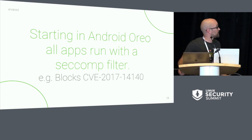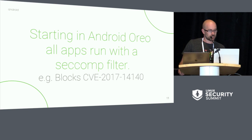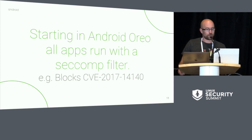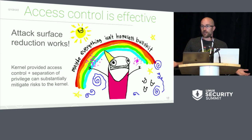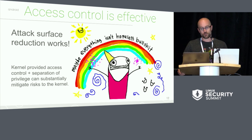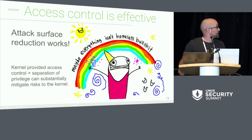For example, there was a vulnerability in the movepages syscall, and we don't use that syscall on Android, so just blocking it to everyone prevents access to that particular vulnerability. The summary from this section is that the kernel provides us with some pretty good tools to protect the kernel from user space, and attack surface reduction works really well. On Android, we've got some pretty good data showing that.